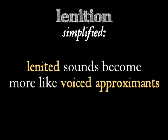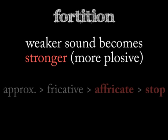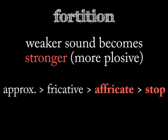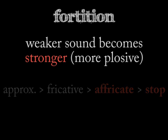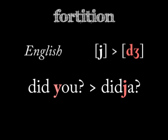When sounds get weaker, becoming more like voiced approximates, we call it lenition. What about sounds getting stronger, towards voiceless stops? That happens too, and it's called fortition. Strengthening turns a less restricted sound, like an approximant or a fricative, into a more restricted one, like an affricate or a stop. For example, the Y sound in 'you' is fortified to an affricate J in the colloquial pronunciation of 'did you' as 'didja'.